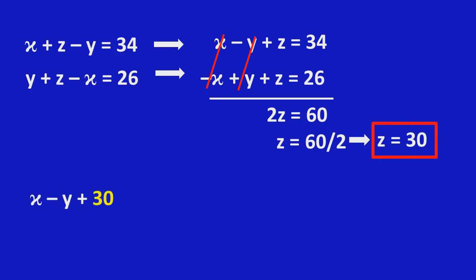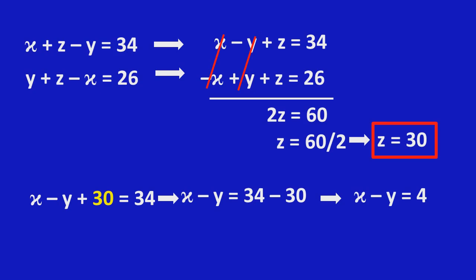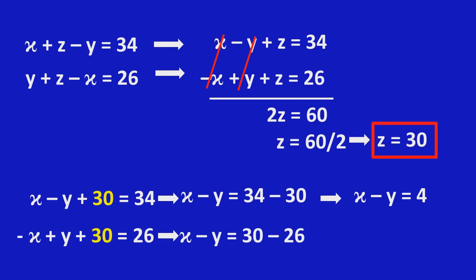Now substitute Z equals 30 into the first equation: X minus Y plus 30 equals 34, which implies X minus Y equals 4. Substituting Z into the second equation: minus X plus Y plus 30 equals 26, which also implies X minus Y equals 4. Both equations represent the same result.